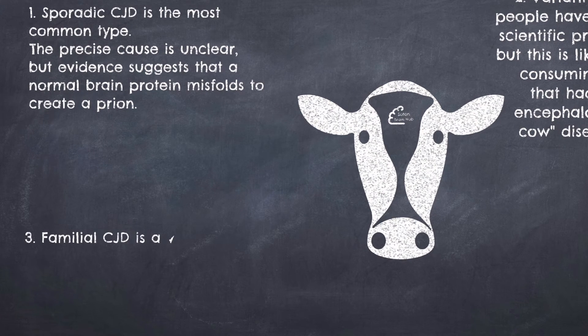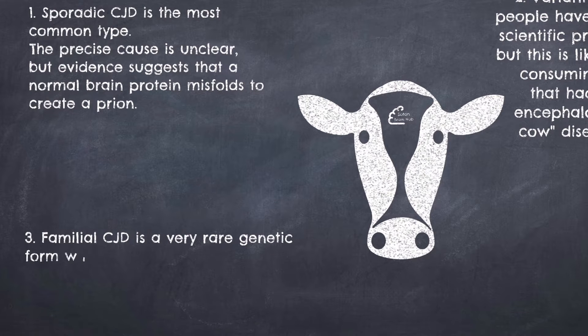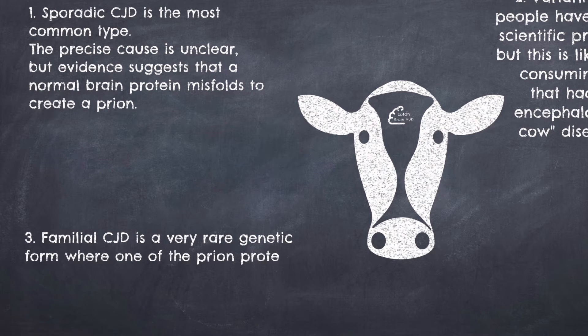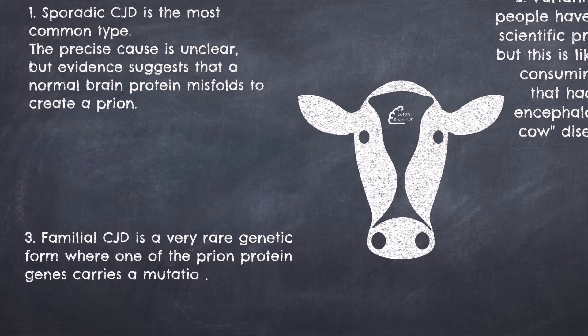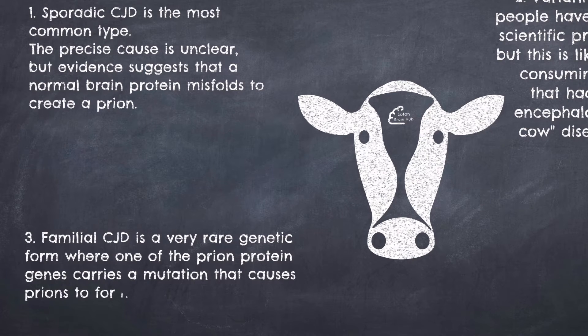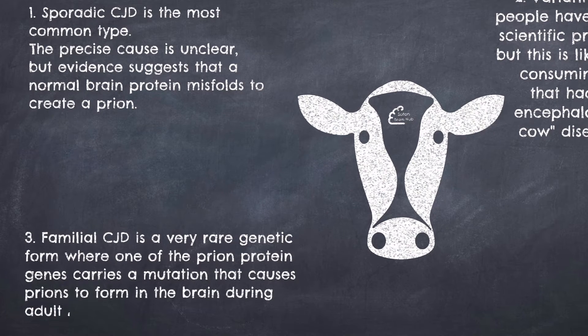Familial CJD is a very rare genetic form where one of the genes encoding the normal prion protein carries a mutation that causes abnormal prions to form in the brain during adulthood.